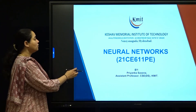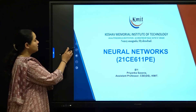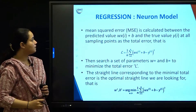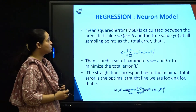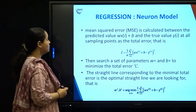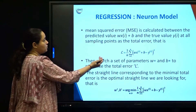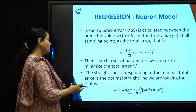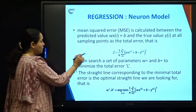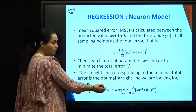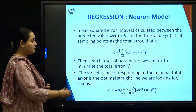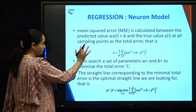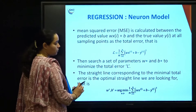Hello students. We have been studying simple linear regression, and in our last session we covered equations to calculate the mean square error. To get an optimal straight line, we need to update our weights and biases using minimum least mean squared error.